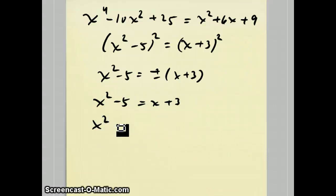When you split this up, you get x^2 - 5 = x + 3, which becomes x^2 - x - 8 = 0. On the other side, we get x^2 - 5 = -x - 3, and that one becomes x^2 + x - 2.